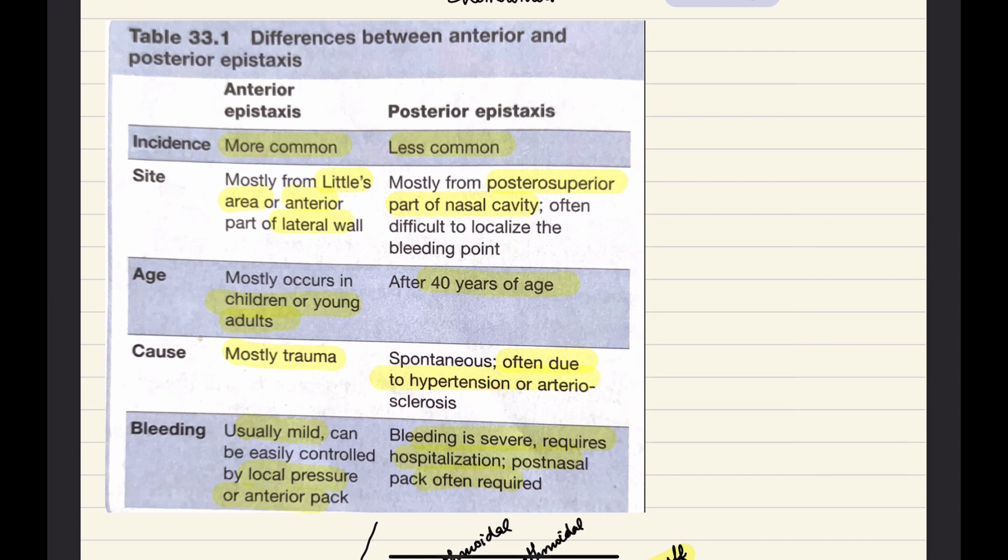In anterior epistaxis, bleeding can be easily controlled by local pressure or anterior pack and this bleeding is usually mild. In posterior epistaxis, bleeding is severe and it requires hospitalization or post-nasal pack is often required.